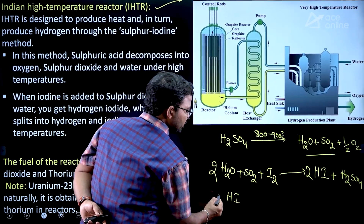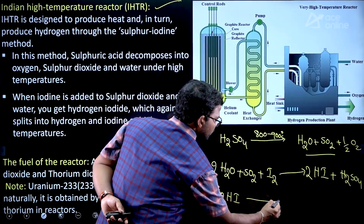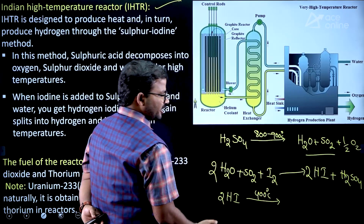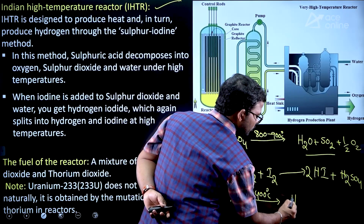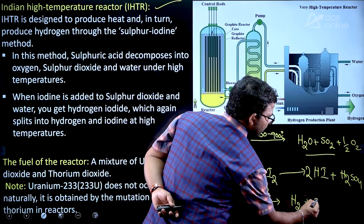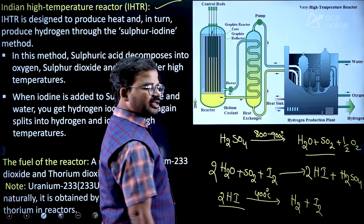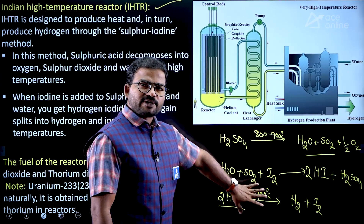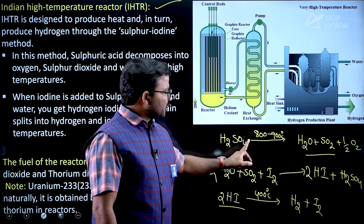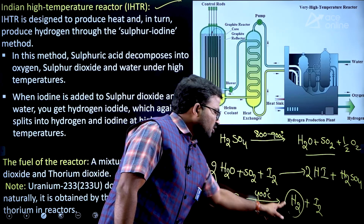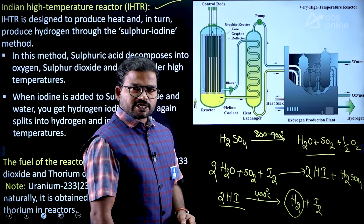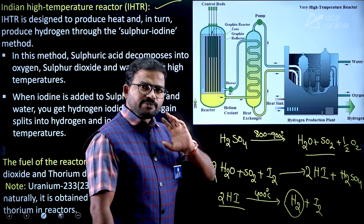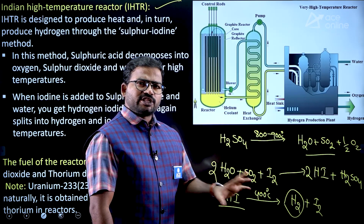The second step involves hydrogen iodide. At more than 400 degrees centigrade temperature, hydrogen iodide dissociates into hydrogen plus iodine. Because of instability at excess temperature, it dissociates. Finally, hydrogen is liberated as a renewable energy fuel. Hydrogen is considered the best fuel.